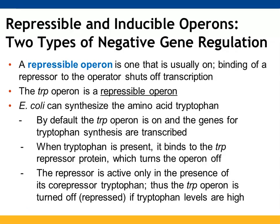The trp operon is a way E. coli can synthesize the amino acid tryptophan. The trp operon stays on because the cells need that amino acid, and the genes involved in the synthesis of tryptophan continue to be transcribed. However, if tryptophan is present in sufficient amounts, it can bind to the repressor protein, changing its shape, and that will turn off the operon. The repressor is only active if the co-repressor is present. If you have sufficiently high levels of tryptophan, you will shut this operon down.